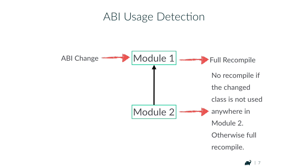What's important to understand about compile avoidance and ABI usage detection: if all your code lives in one module, what do these give you? Nothing. They are fast, cheap checks that improve the efficiency of getting cached build results, but they still trigger a lot of full recompiles. The efficiency increases with more and smaller modules.